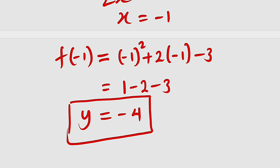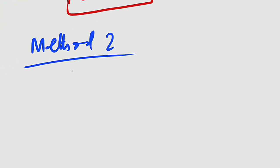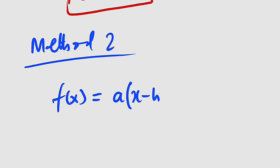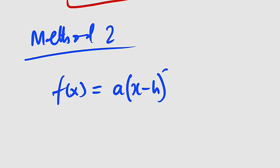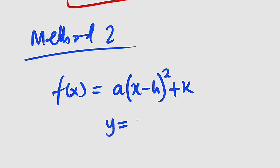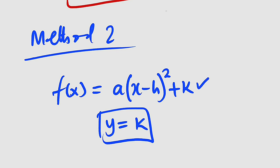The second method uses the vertex form of a quadratic function. The vertex form is given as f(x) = a(x − h)² + k, where a is the leading coefficient — in our case 1. h is the value of x at the turning point, which we obtained to be negative 1. k is the value of y at that point, so y will be equal to k at that point. How can we transform our quadratic function into this form?